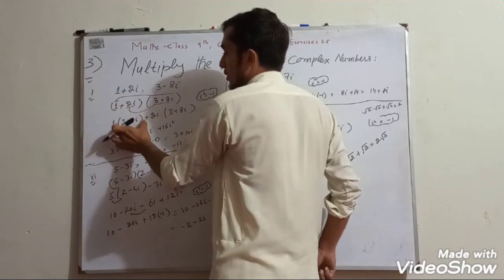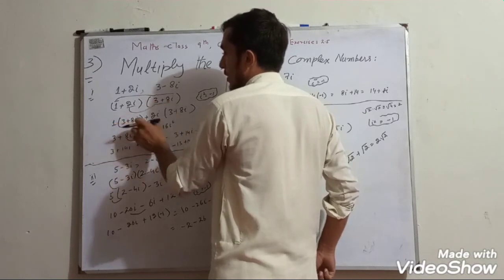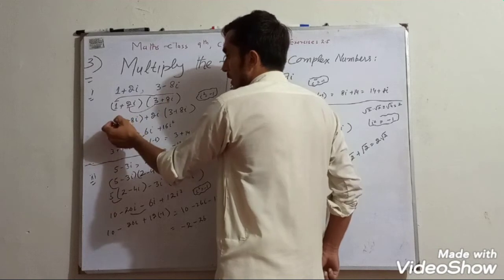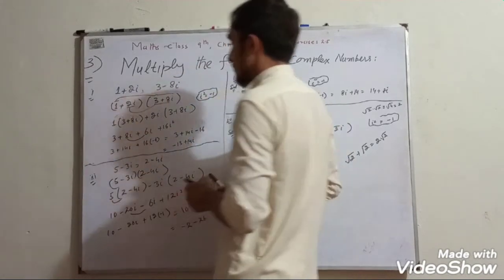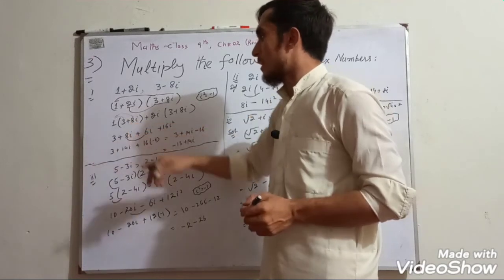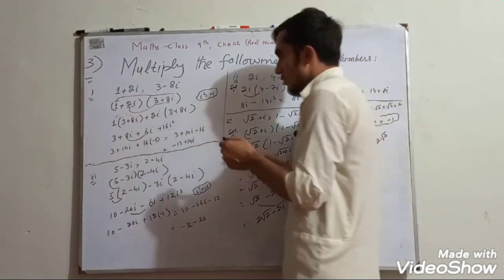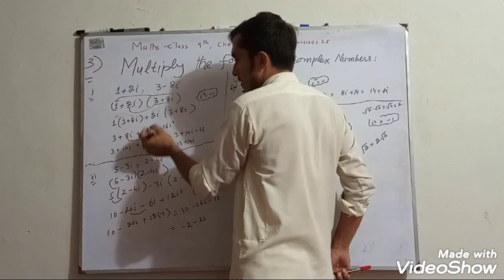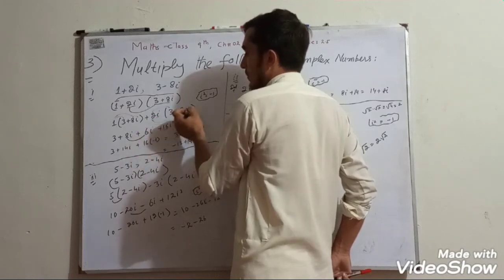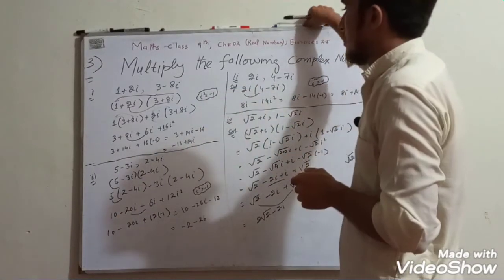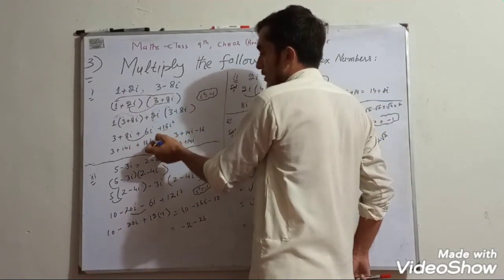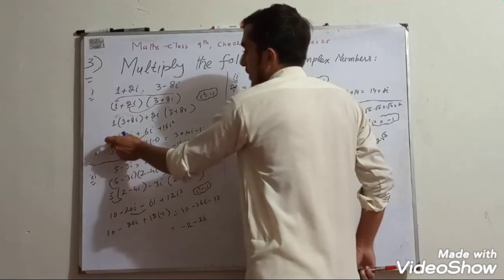Multiply 1 plus 2 iota by 3 plus 8 iota. First: 1 multiplied by 3 gives 3. Then 1 multiplied by 8 iota gives 8 iota. Then 2 iota multiplied by 3 gives 6 iota. Then 2 iota multiplied by 8 iota gives 16 iota squared. Since iota squared equals minus 1, we get 3 plus 8 iota plus 6 iota minus 16.